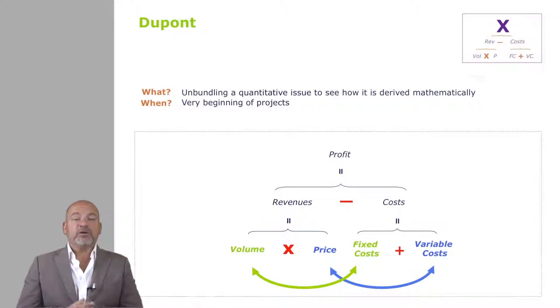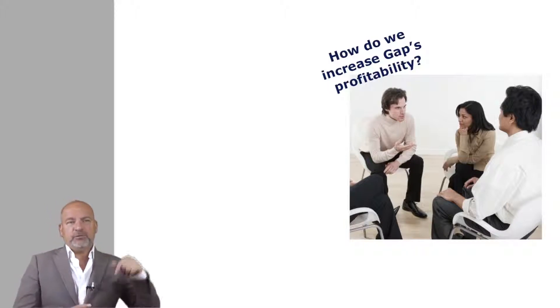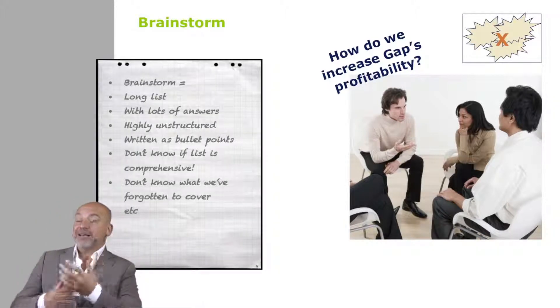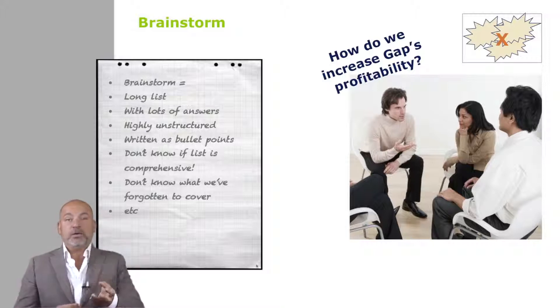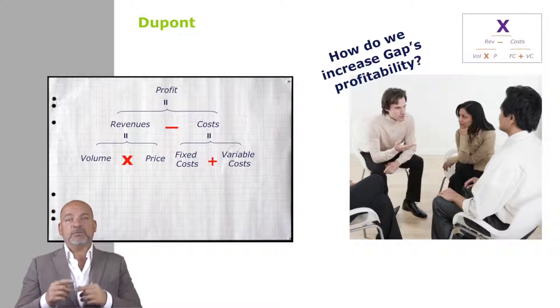Now, if I ask you, for example, how do I increase the profit of Gap? Those of you who've watched the Key Thinking Technique course will know that we've done this exercise before. And when I ask it live, people come up with lots of answers. Can you see that if instead of having a big brainstorm about 20 ideas, you create a quick DuPont and you go profit equals revenue minus cost, revenues is volume times price, etc., then how do you come up with four ideas to improve profits?